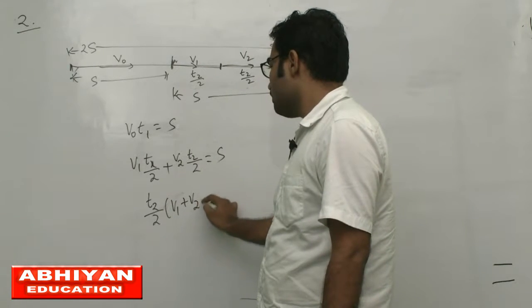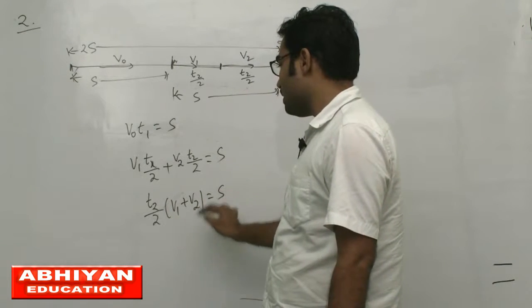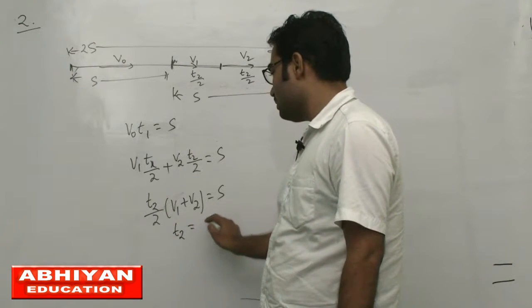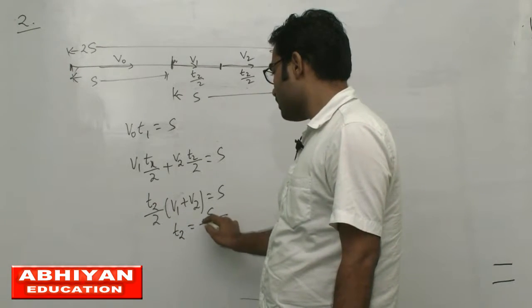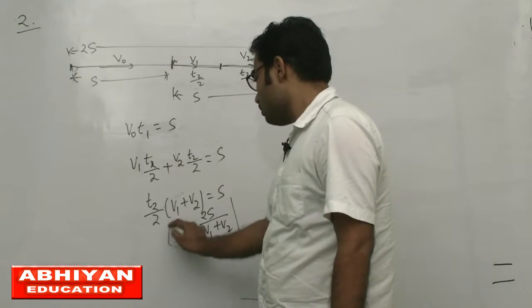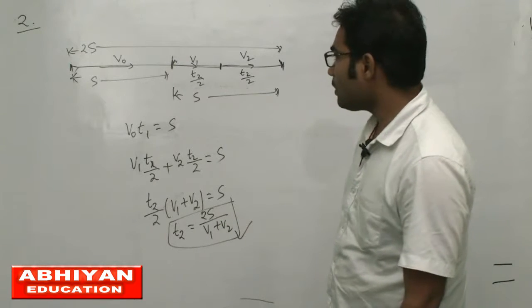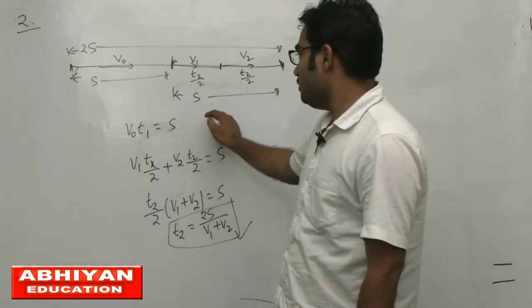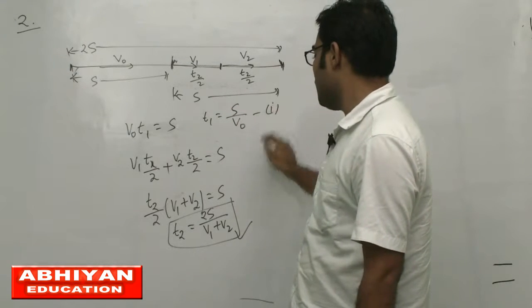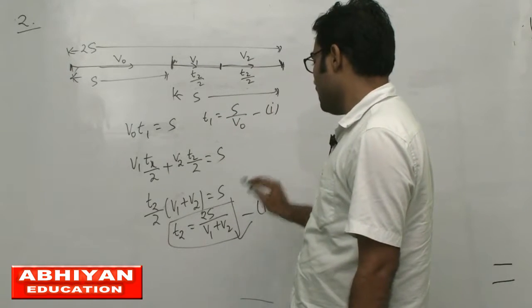So t2 equals 2s divided by v1 plus v2. And t1 value is s divided by v0. This is equation 1, and this is equation 2.